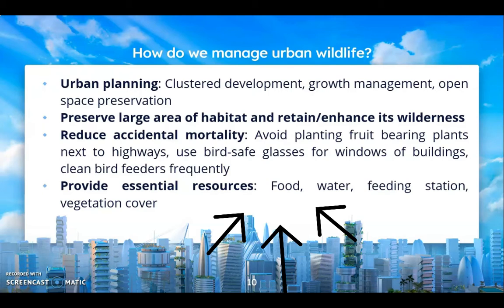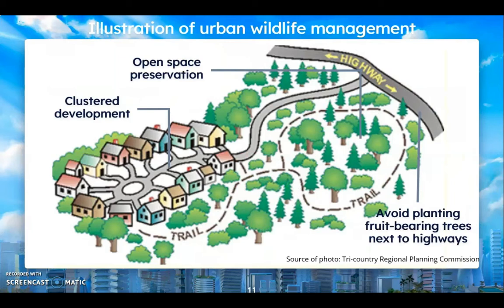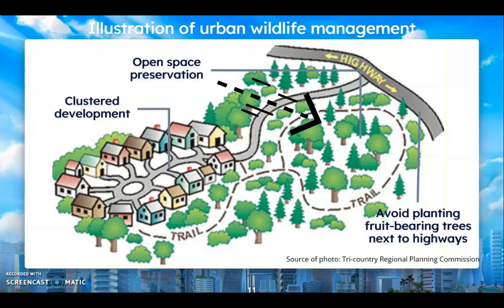Here is an illustration of a region with good urban wildlife management. On the left, we have clustered development, which groups together human resettlement. On the right side, we have open space preservation, which serves as habitat for urban wildlife. On the highway side, we avoid planting fruit-bearing trees so that the probability of urban wildlife being killed by vehicles can be decreased.